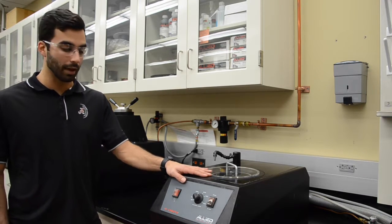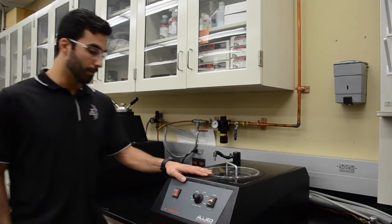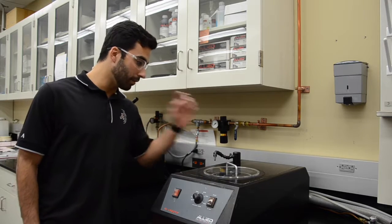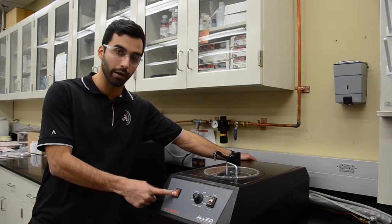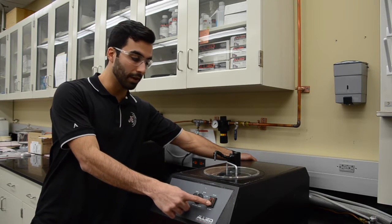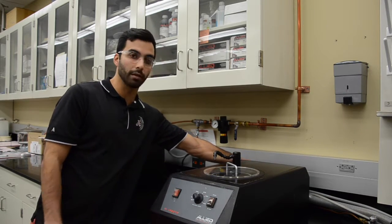For grinding and polishing, we're going to be using the Allied Hi-Tech M-Prep 3. Basically to turn on the machine, it's in a switch back here. Before turning it on, you want to make sure that the water is off and that the platen is not running. Once you make sure of that, you can go ahead and turn it on.